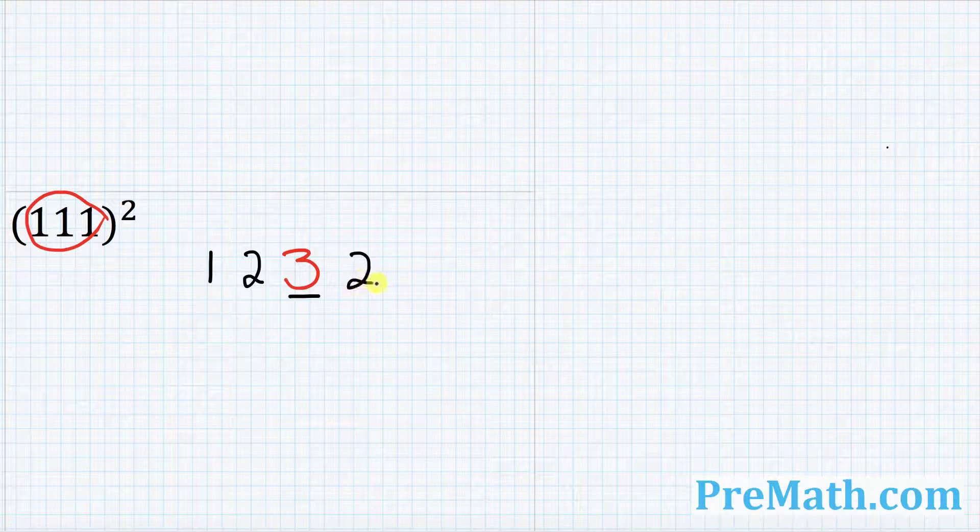Once you hit three then I want you to count backward. That's gonna become what? Two, one. Piece of cake. That's our answer.